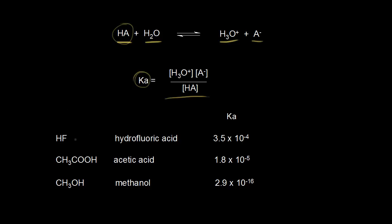So here we have three weak acids: hydrofluoric acid, acetic acid, and methanol. And over here are the KA values.